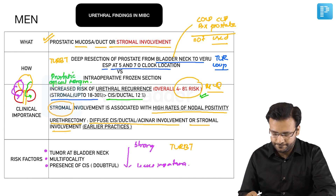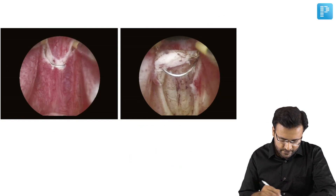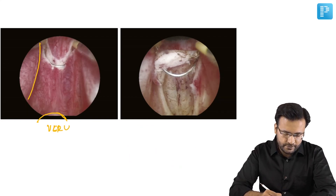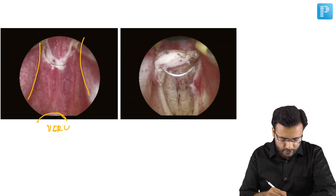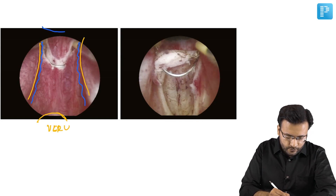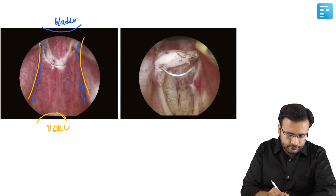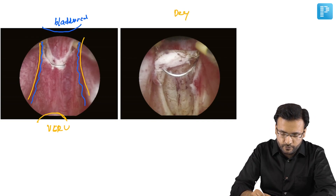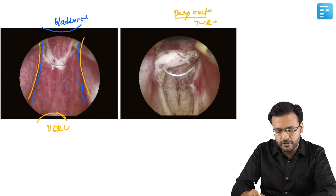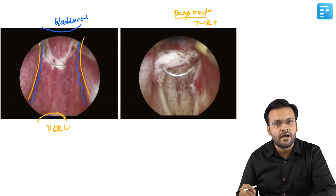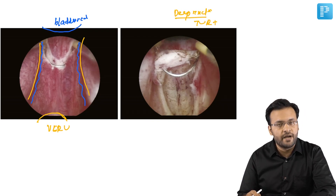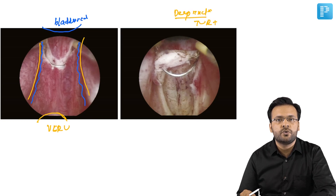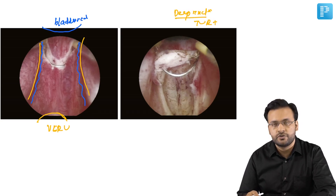A cystoscopic view shows the impression of the verumontanum, the right prostatic lobe, the left prostatic lobe, the floor of the prostatic fossa, and the bladder neck. Using the loop, we take deep resections — always remember these must be deep resections, which is why a transurethral resection using a loop must be done for assessment of the prostatic urethra and not cold cup biopsy. These specimens are sent for biopsy where the pathologist will report on involvement, signifying carcinoma in situ, prostatic ductal, acinar, or stromal involvement.